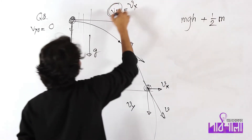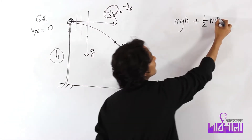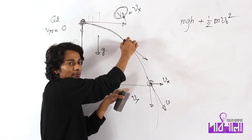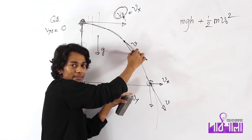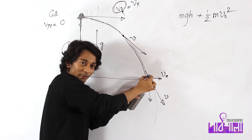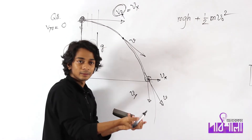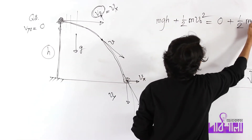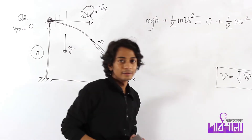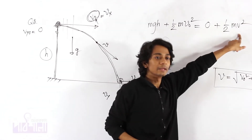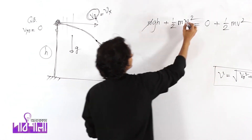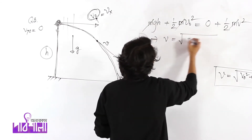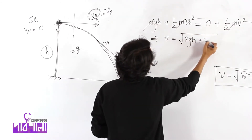V0, so we have half m, v0 squared. We have to say: 1, m, v2. The target is v. So: 1, m, v equals root over 2gh plus v0 squared.